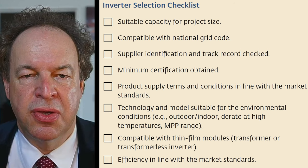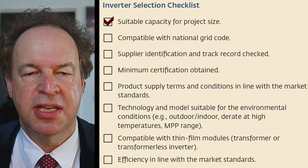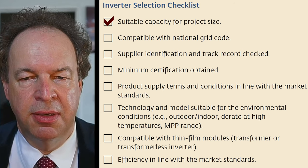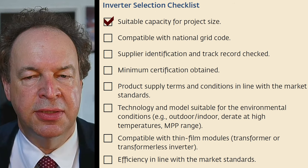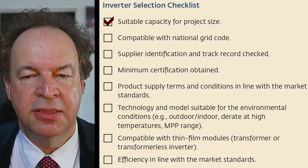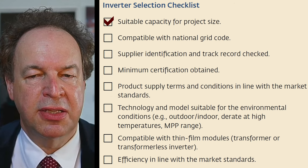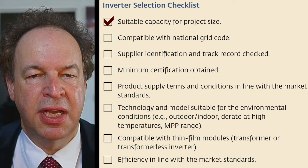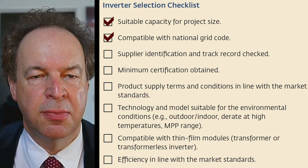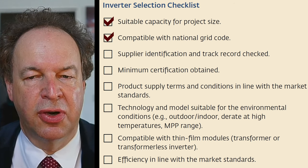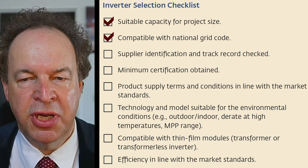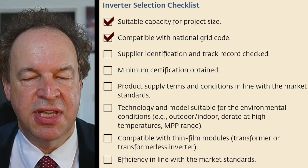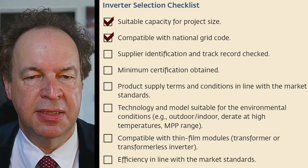Let's come to the inverter checklist. Suitable capacity for the project size — in Europe the modules seldomly achieve the power output under standard test conditions, so you may undersize the inverter a little without many losses. For other countries it's different — you're quite close to standard test conditions, so you have to choose the right inverter size. Every country has its own national grid code, so the inverter has to be compatible and have the correct certificate — this could include fault-ride-through, harmonics, and so on. Whether the inverter can be switched off remotely depends on the project size. This has to be checked in advance and is quite cumbersome.